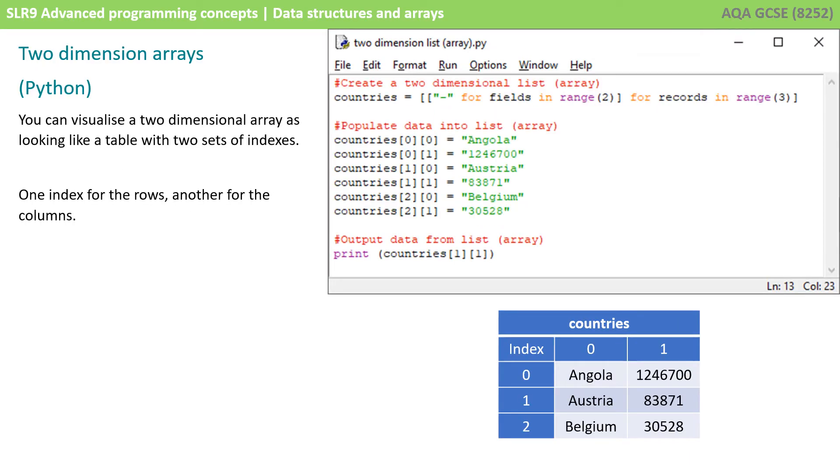You can also have two-dimensional arrays, and you can visualize in your head a two-dimensional array as looking like a table, where we now need two sets of indexes, one to index the rows and another to index the columns. So, to access Angola, you'd be going to index 0, 0, as shown here.